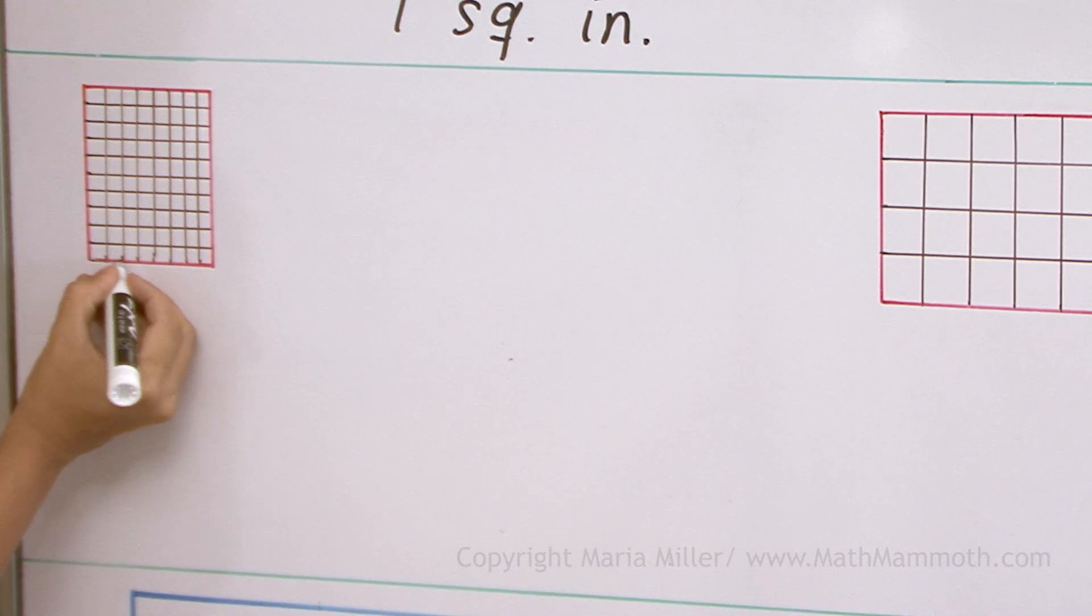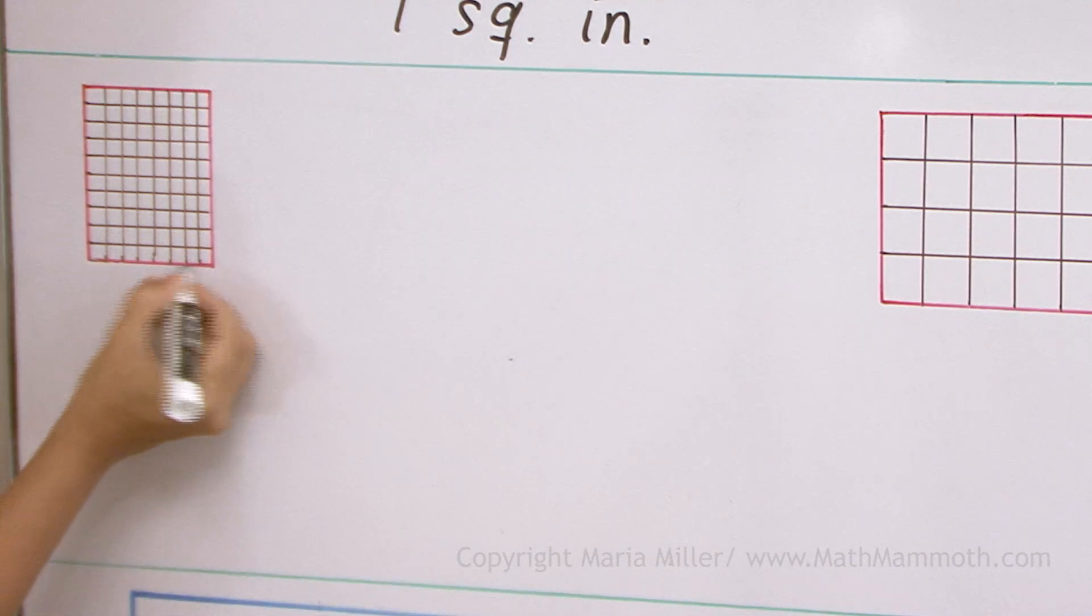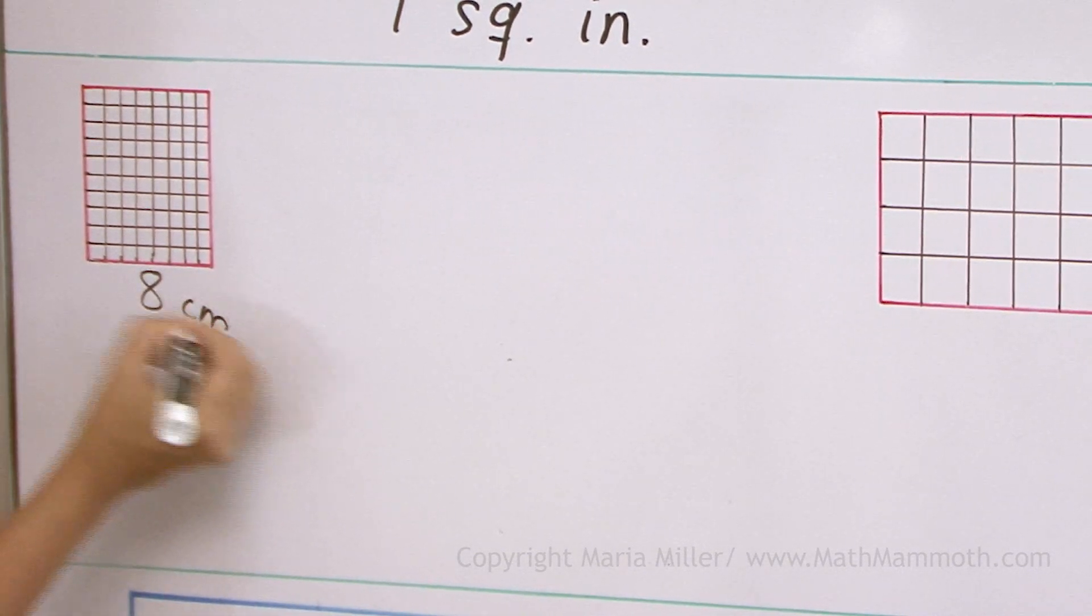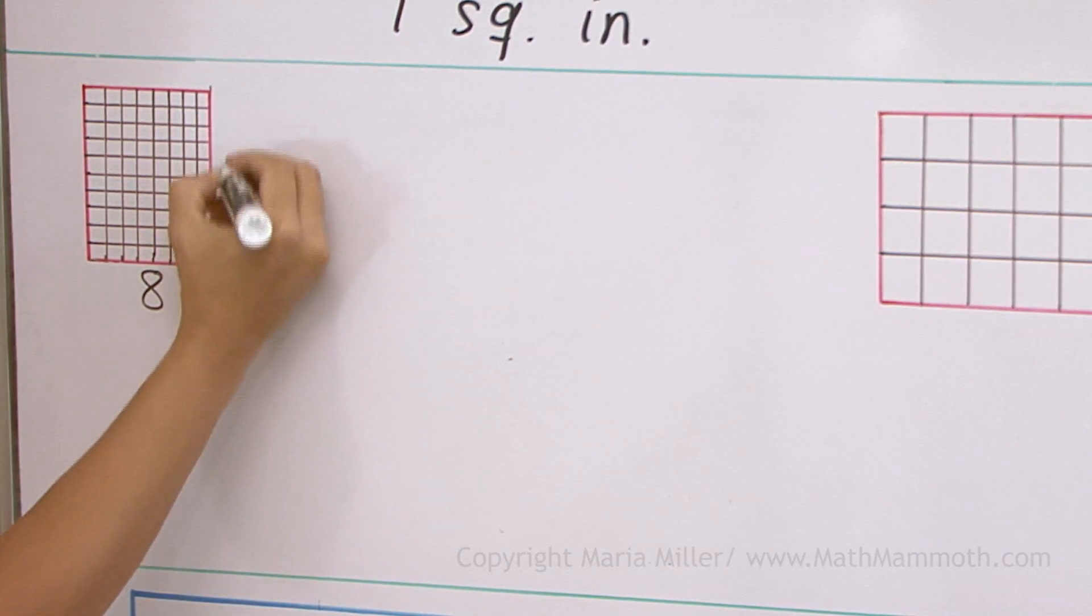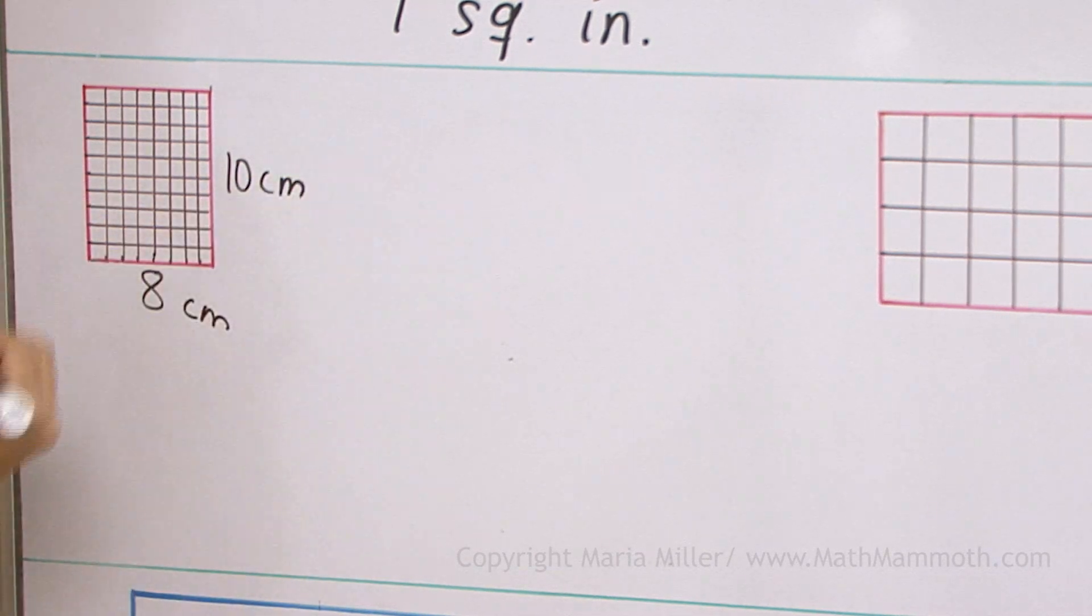So over here I have 1, 2, 3, 4, 5, 6, 7, 8 centimeters this way. And then 1, 2, 3, 4, 5, 6, 7, 8, 9, 10 centimeters that way.